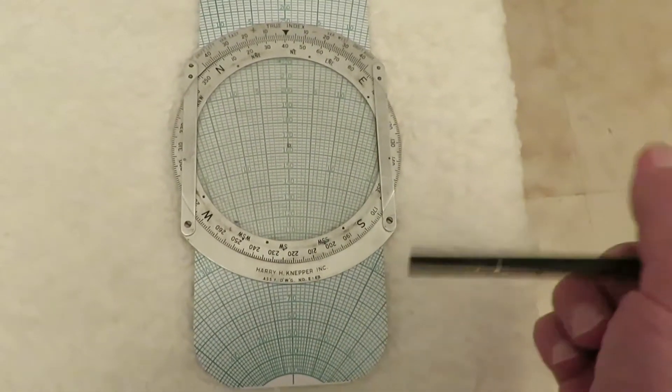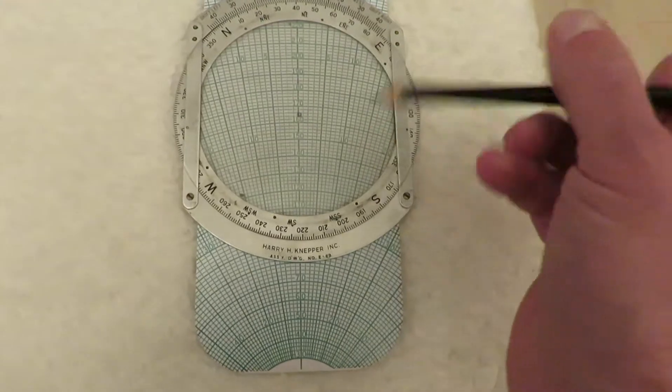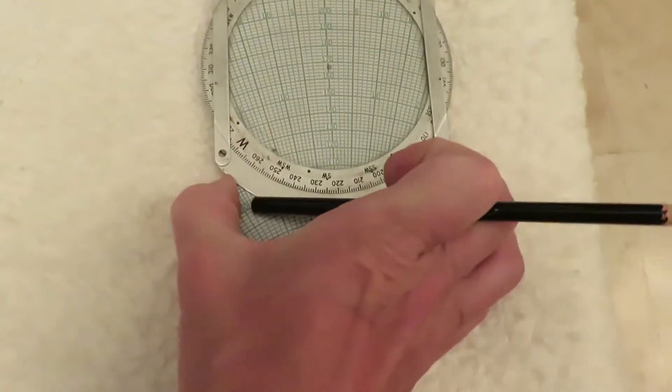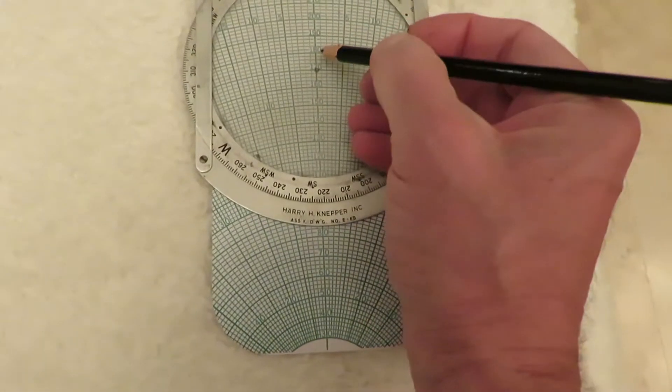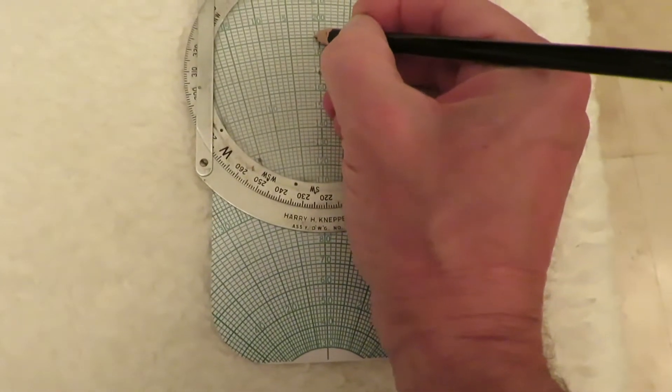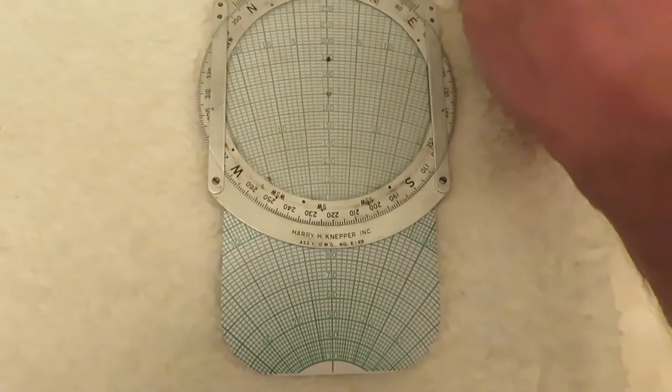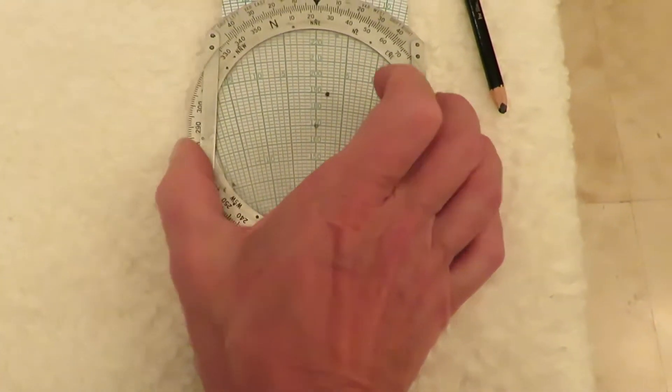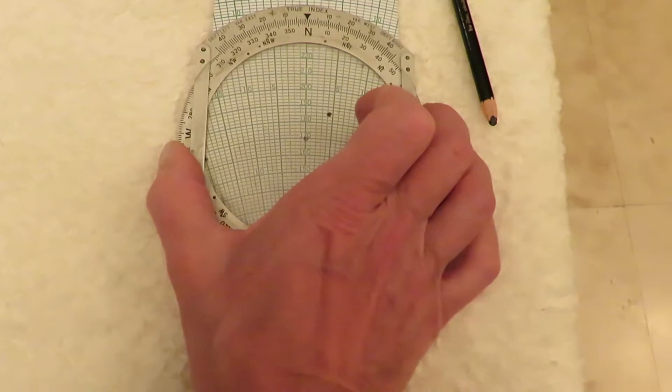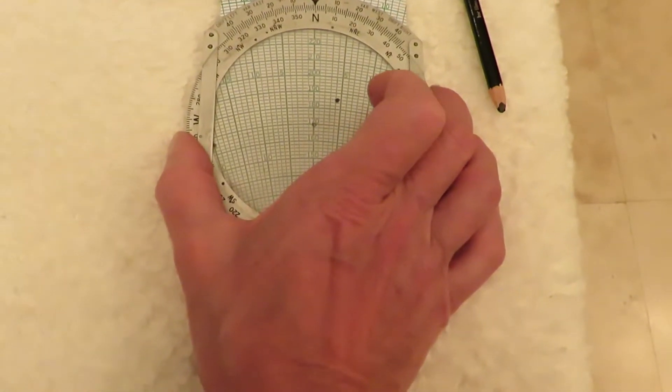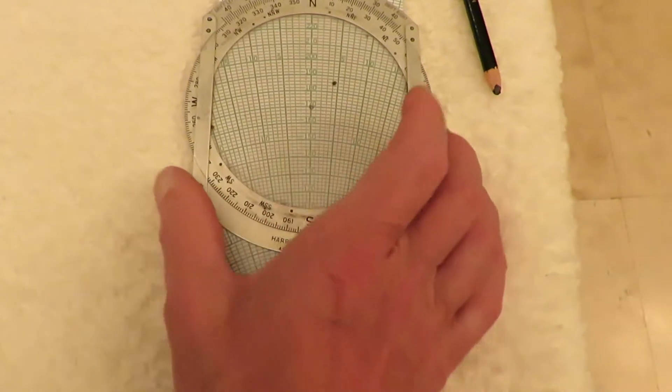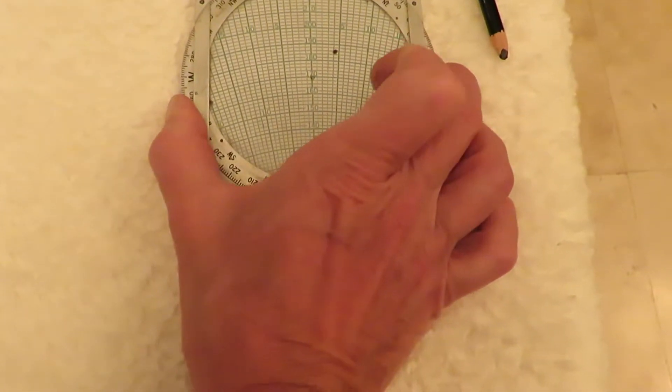Now, you place a dot on a line representing the aircraft's true airspeed. In this case, we'll say 20 knots. Then you turn the wheel to the aircraft's heading. In this example, we'll go with true north. Finally, you set the dot on a line representing the aircraft's true airspeed. In this case, we'll say 160 knots.